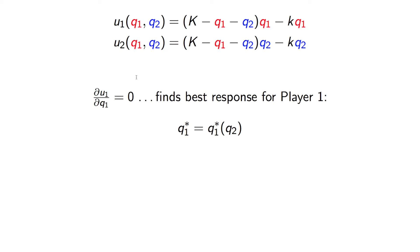We could very easily find the best response for player one. We simply take the partial derivative of U1 with respect to Q1, and we would obtain some expression for Q1 star, the best response for player one, given player two playing Q2. For any given Q2, you could write down what is the best thing for player one to do.